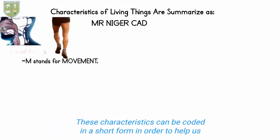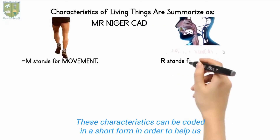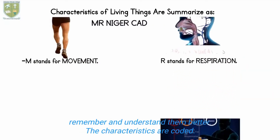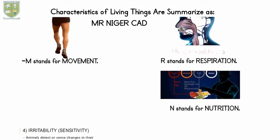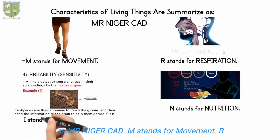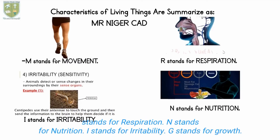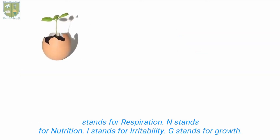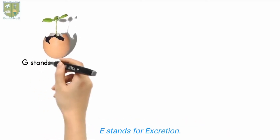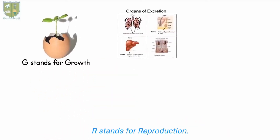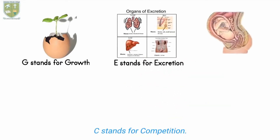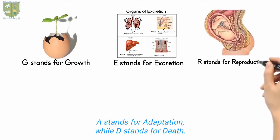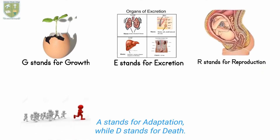Characteristics of living things. These characteristics can be coded in a short form to help us remember and understand them easily. The characteristics are coded as Mr. Niger-Cad. M stands for Movement, R stands for Respiration, N stands for Nutrition, I stands for Irritability, G stands for Growth, E stands for Excretion, R stands for Reproduction, C stands for Competition, A stands for Adaptation, and D stands for Death.